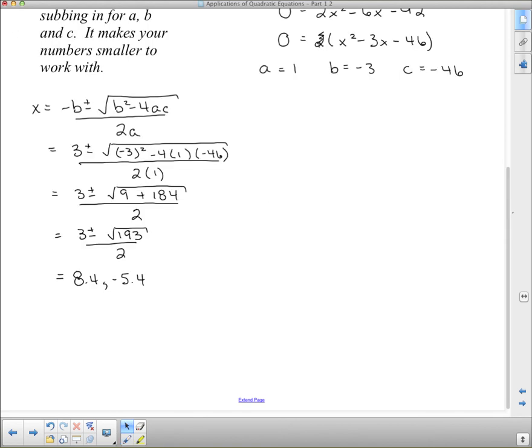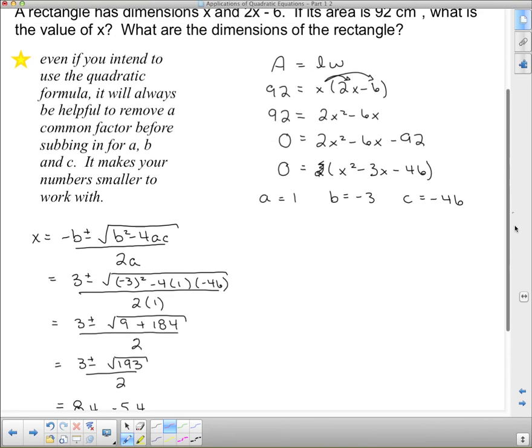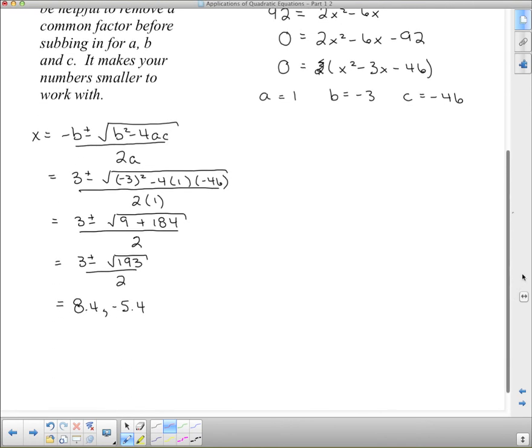Ta-da! So, here we have our 2 answers. Now, we have to figure out which answer is good and which answer is not so good. Now, remember what we're trying to find here. These are the dimensions of a rectangle. In the real world, you cannot have a negative dimension of a rectangle. So, this answer is our inadmissible answer, which I'm just going to write as in-add. So, our x value has to be 8.4.